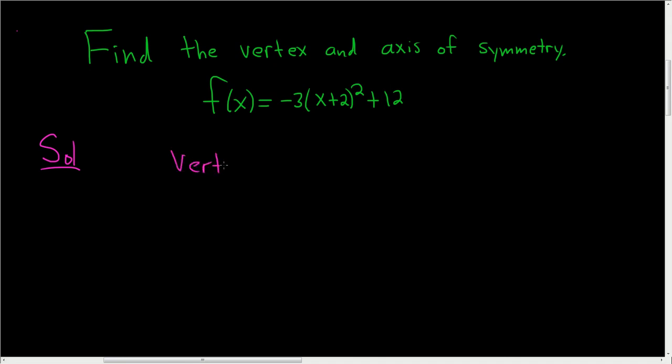So to find the vertex, when you have a parabola written in this way, all you do is switch the sign, keep the sign, switch the sign, keep the sign. So you have a positive 2, so that's negative 2. And you have a positive 12, so you keep it.